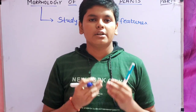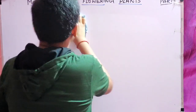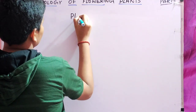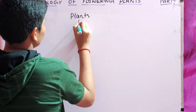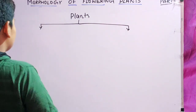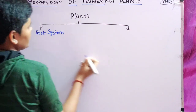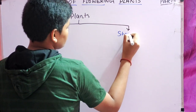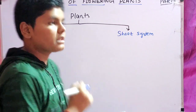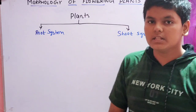When you are looking at a plant, you see two parts. Plants have two main parts: one part which is visible to us and one part which is not visible to us. One is the root system — the part below the ground — and one is the shoot system — the part above the ground.